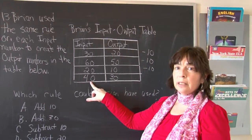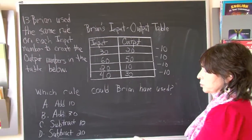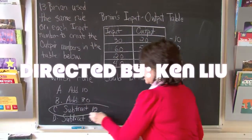And the last number, 40 minus 10, gives us 30. So boys and girls, the rule that Brian used was subtract 10.